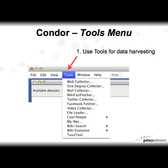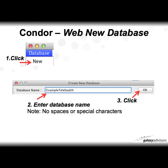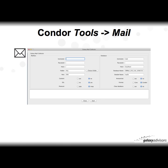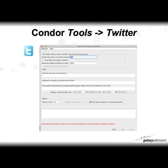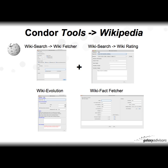If you click on the Tools menu, you'll see a long list of possible tools for data harvesting. For example, the web tool has a form — here's the one for web collection. In the upper left corner you'll see Database. Your first step is to create a new database, enter a name with no spaces or special characters, and click OK. The data from your search is stored in a MySQL database with the name you gave. For email, here's the form to retrieve your email for analysis. For Twitter, there are a number of parameters you can set for the query.